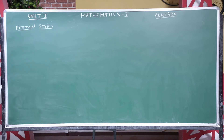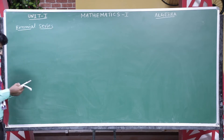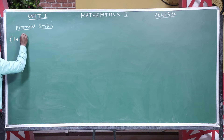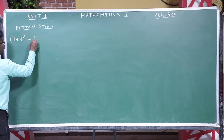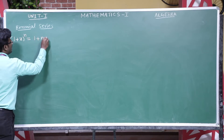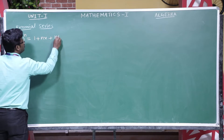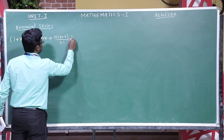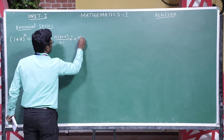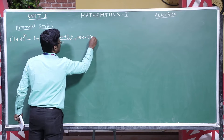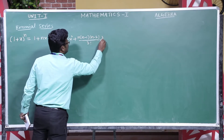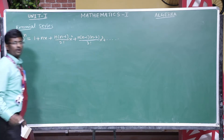In the binomial series, we expand some formulae. The first is: (1 + x) whole to the power n equals 1 plus nx plus n(n−1) divided by 2 factorial times x squared, plus n(n−1)(n−2) divided by 3 factorial times x cubed, and so on.